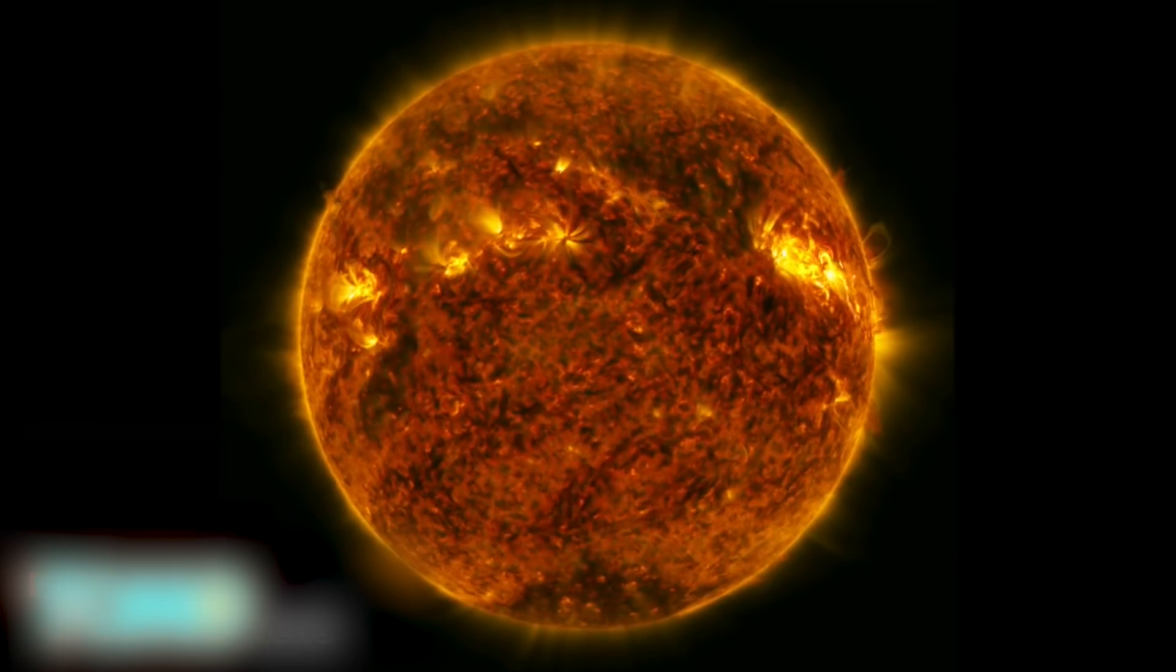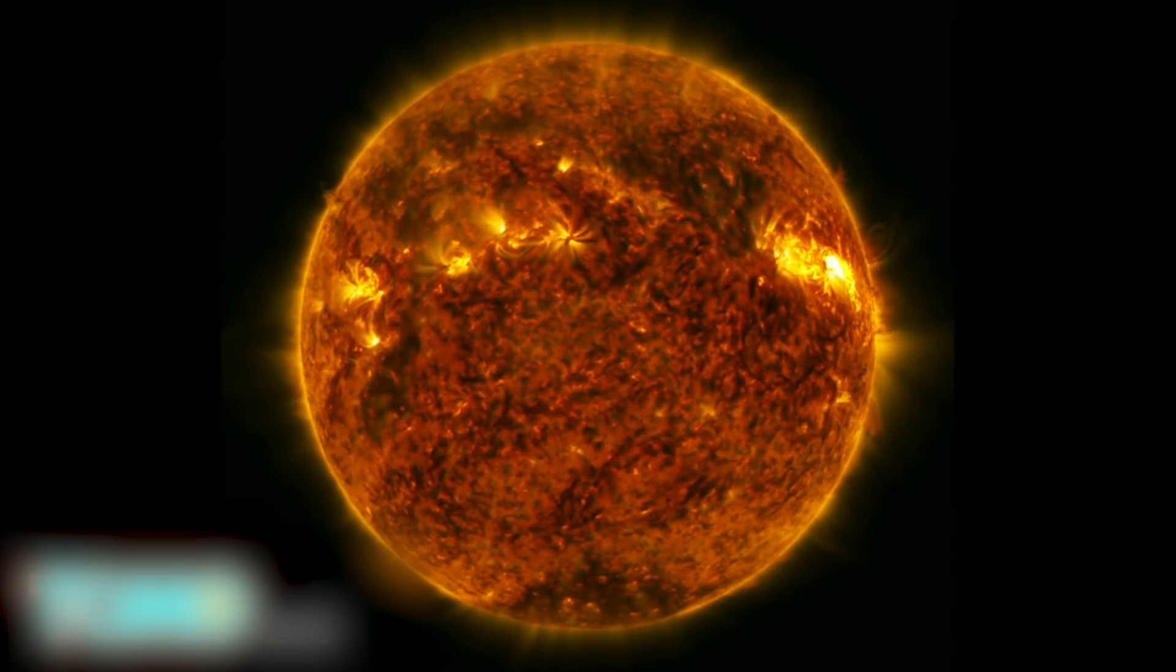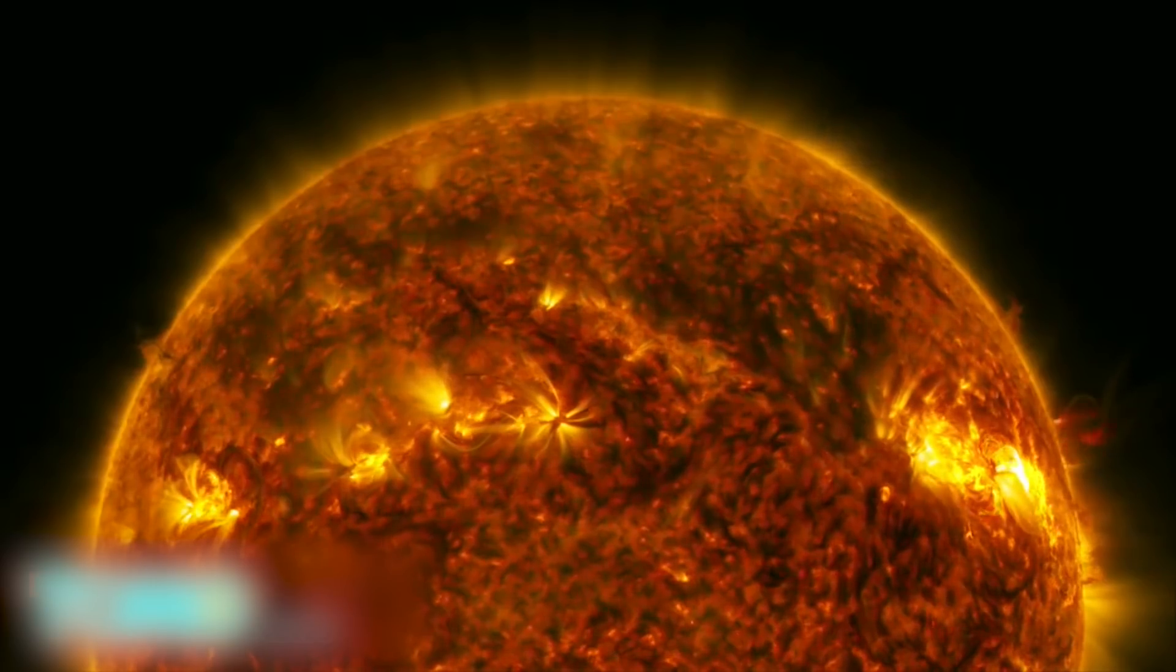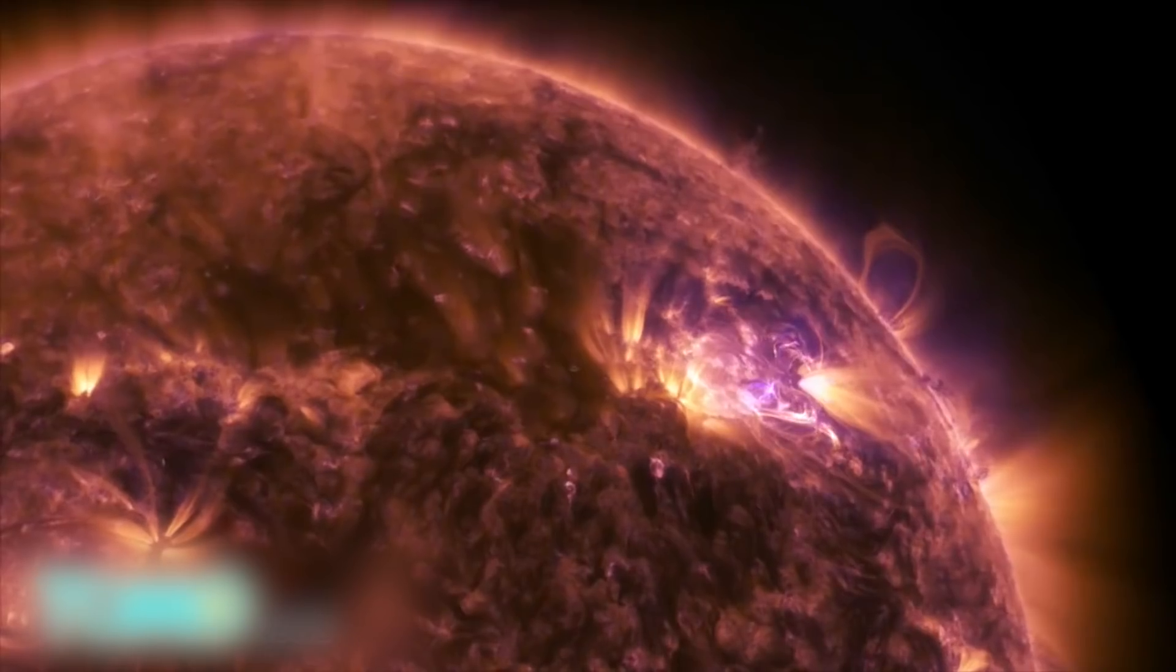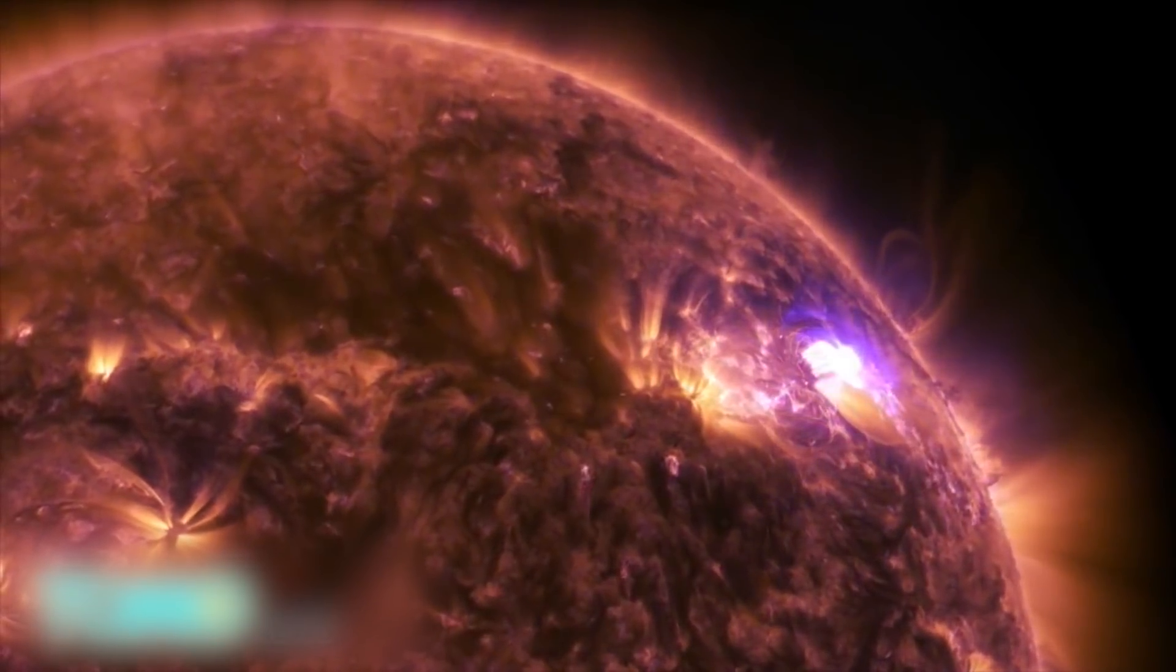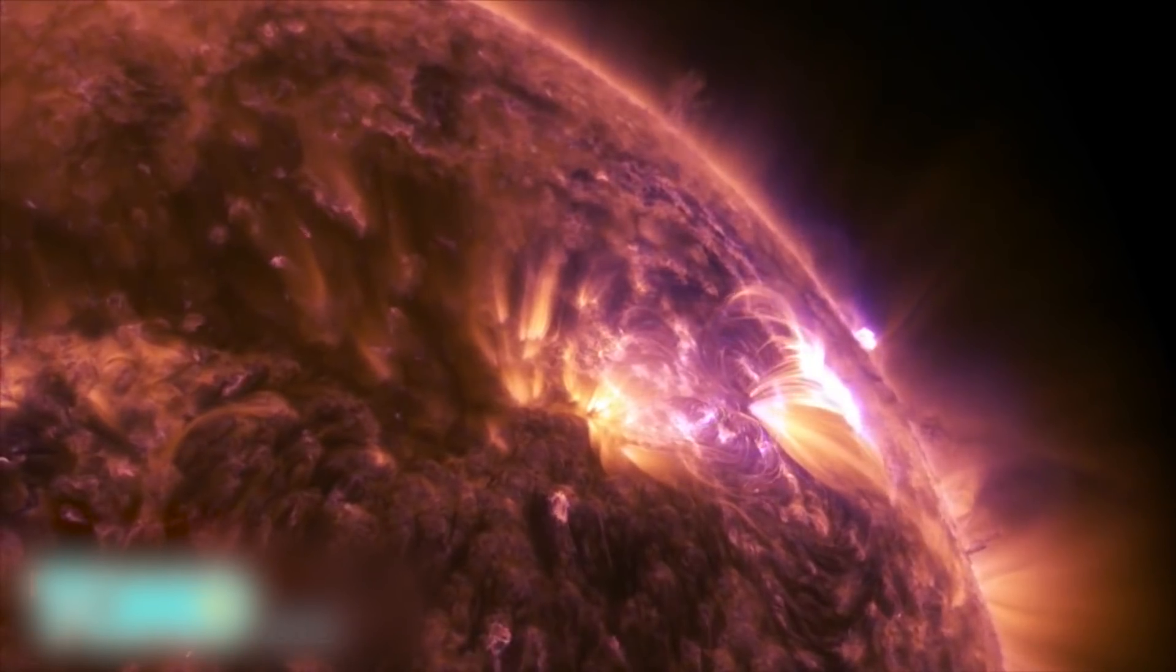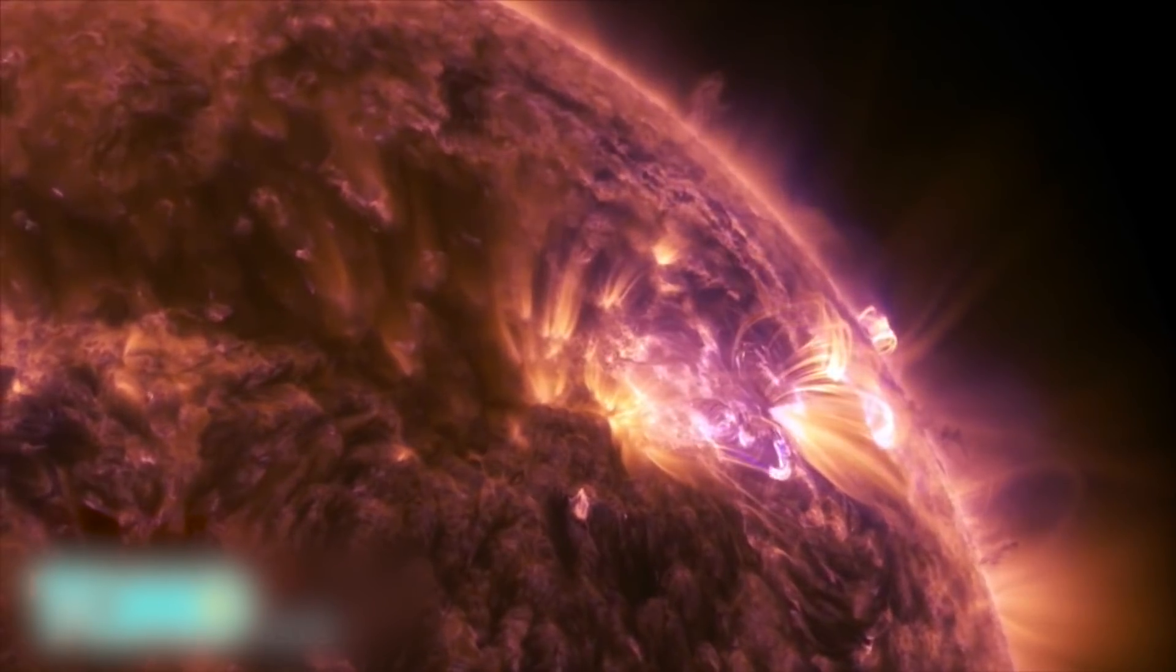This video was captured in several wavelengths of extreme ultraviolet light, a type of light that is typically invisible to our eyes but is color-coded for easy viewing. Solar flares are a powerful burst of radiation. Harmful radiation from a flare cannot pass through Earth's atmosphere to physically affect humans on the ground. However, when intense enough, they can disturb the atmosphere in the layer where GPS and communication signals travel. The NOAA's Space Weather Prediction Center said this flare caused moderate radio blackouts. Scientists study active regions, areas of intense magnetism of the sun to better understand why they sometimes erupt with such flares.